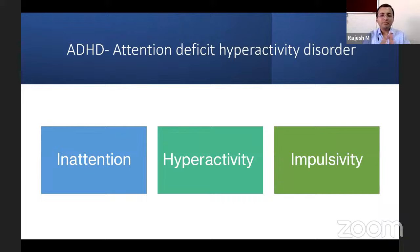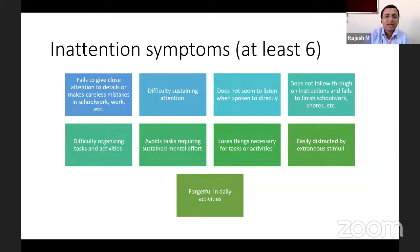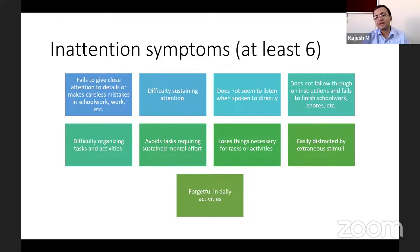ADHD consists of mainly three symptom dimensions: inattention, hyperactivity, and impulsivity — with hyperactivity and impulsivity often considered together. Inattention symptoms include failing to give close attention to details, making careless mistakes, difficulty sustaining attention, not listening when spoken to, not following instructions, failing to finish schoolwork, difficulty organizing tasks, avoiding tasks requiring sustained mental effort, losing things unnecessarily, being easily distracted by extraneous stimuli, and forgetfulness in daily activities.